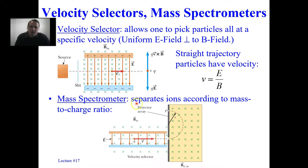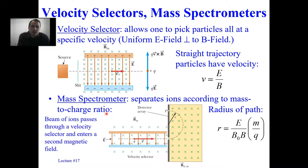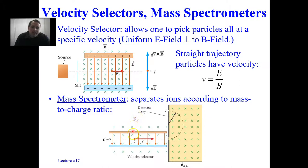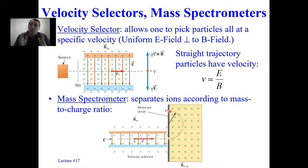A mass spectrometer separates ions according to mass-to-charge ratio. It's somewhat like a velocity selector — there's a velocity selector portion, but then the particle enters only a magnetic field, which can have a different strength B₀ than the selector's field. The particle travels in a semicircle — half circle — because if a charged particle is in a uniform magnetic field with velocity perpendicular to the field, it undergoes uniform circular motion.